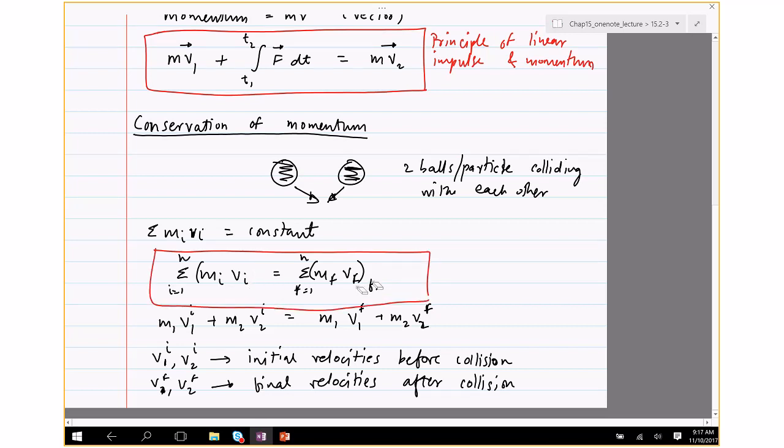So if you sum the momentum before collision, it should be the sum of momentum after collision. Let me write this in a slightly different way just to make it consistent with the earlier notation. So the summation of mj vj, where this is the initial momentum, equals the summation of mj vj final, where j goes from 1 to N, where there are N particles.